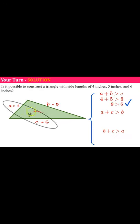So we're going to move on to the next two sides, A and C. 4 plus 6 must be greater than the third side 5. 10 is greater than 5, it checks.